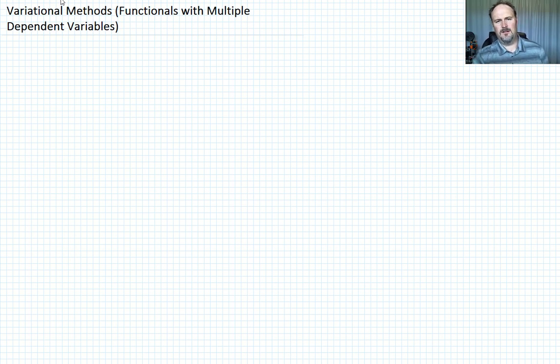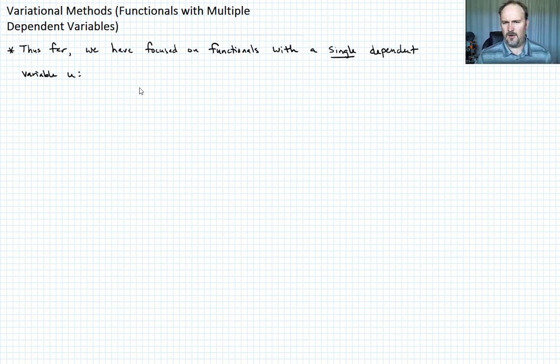Let me just remind you of what we focused on thus far. We focused on a single dependent variable u so far. And that functional took the form of, remember, i of u is equal to the integral from a to b of f, which is function of x, u, and u prime. This is our kind of the one we initially developed. We'll call that equation 1.